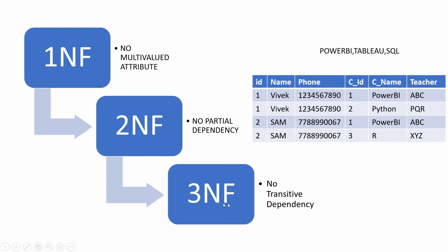Now in this video, we are going to talk about third normal form, which has two basic rules. The data set should be in second normal form, and non-prime attributes should only depend on the candidate key and should not have any transitive dependency on non-candidate key columns.